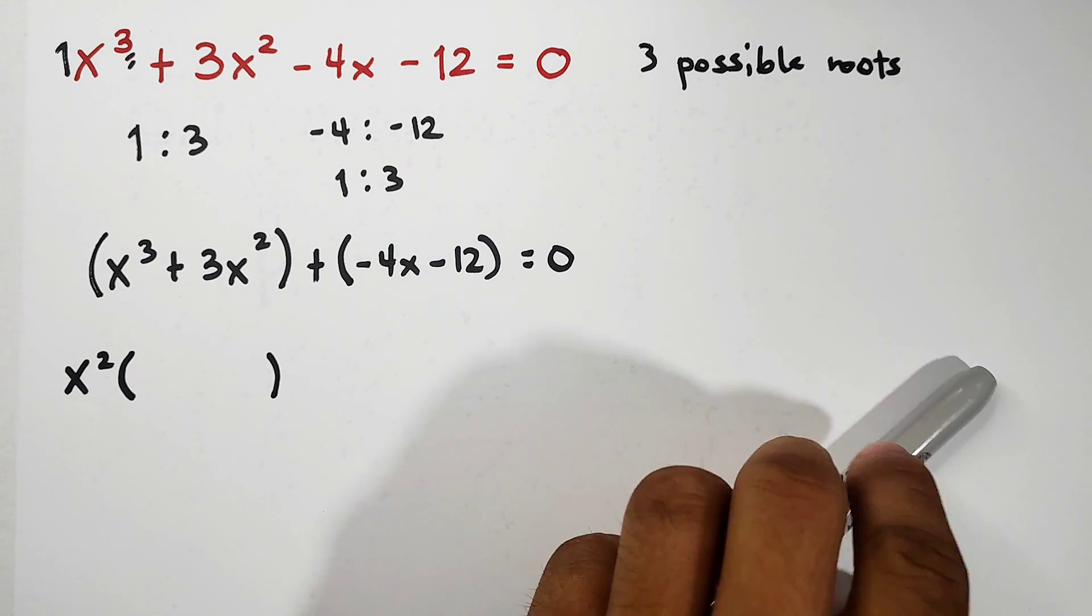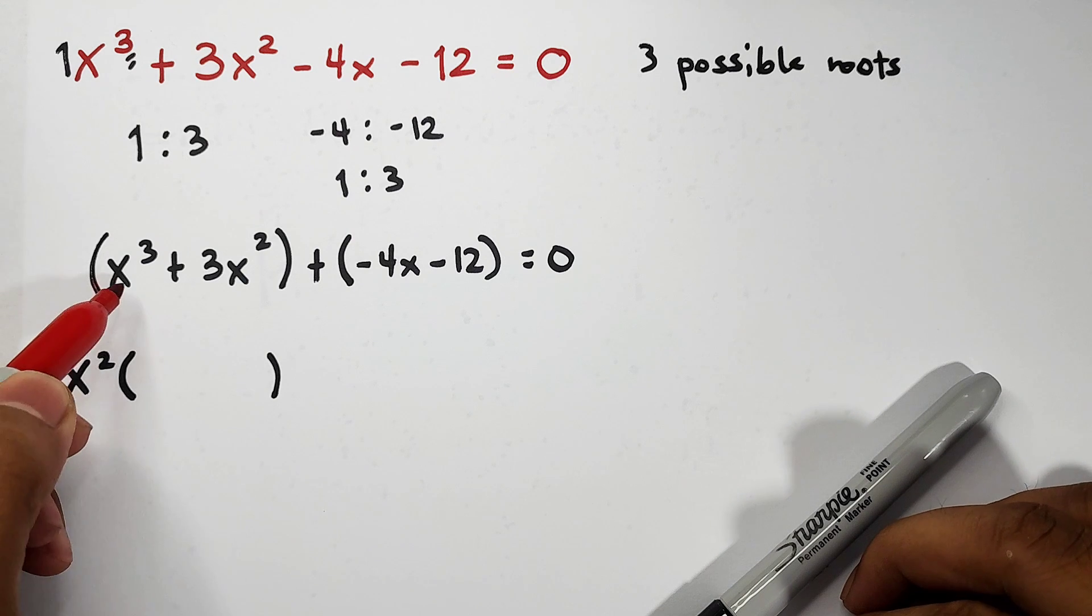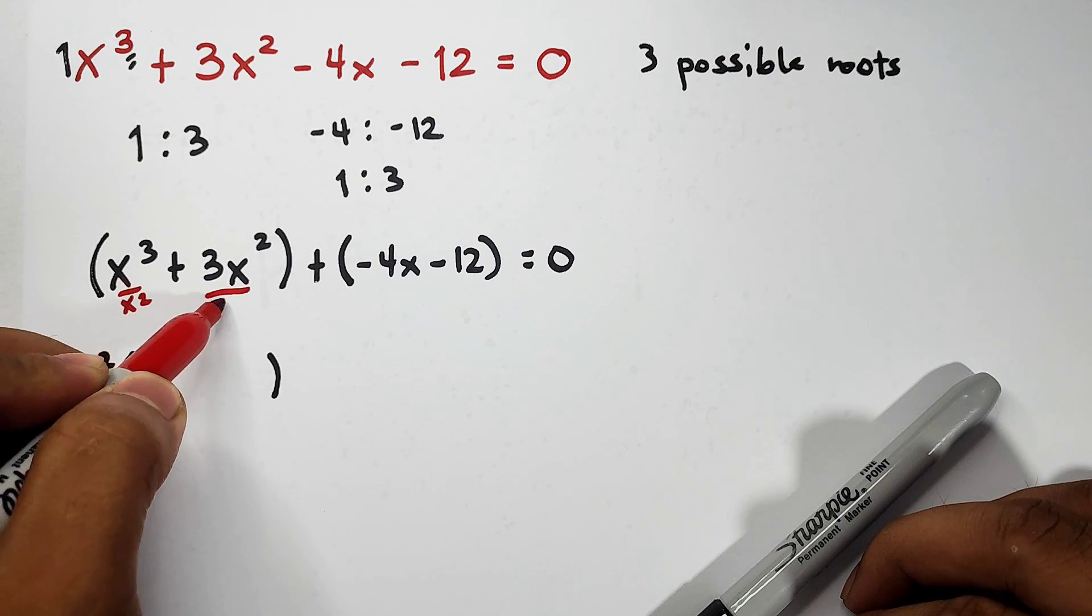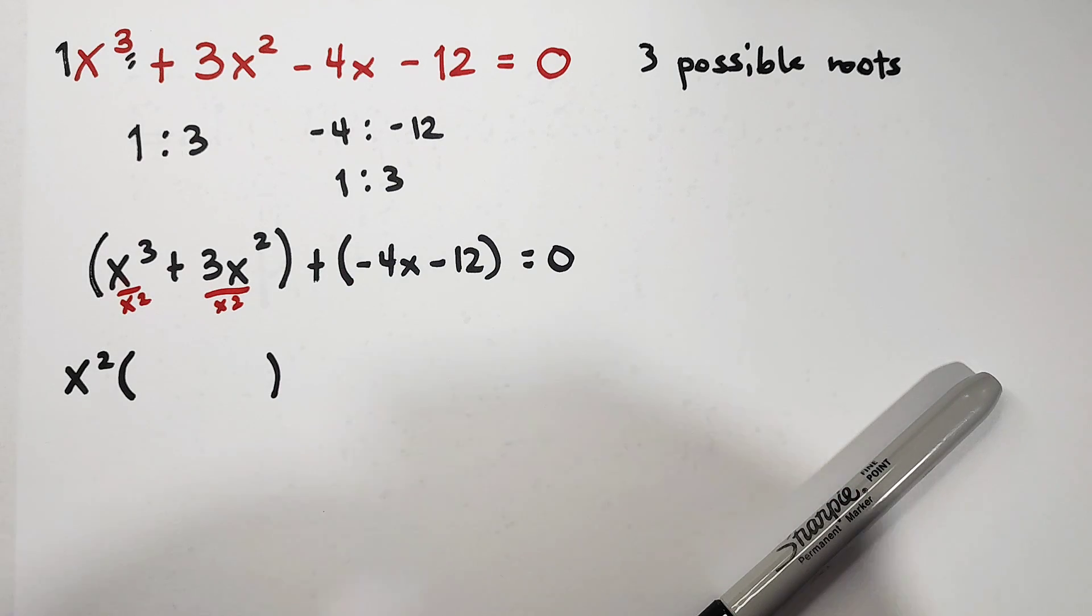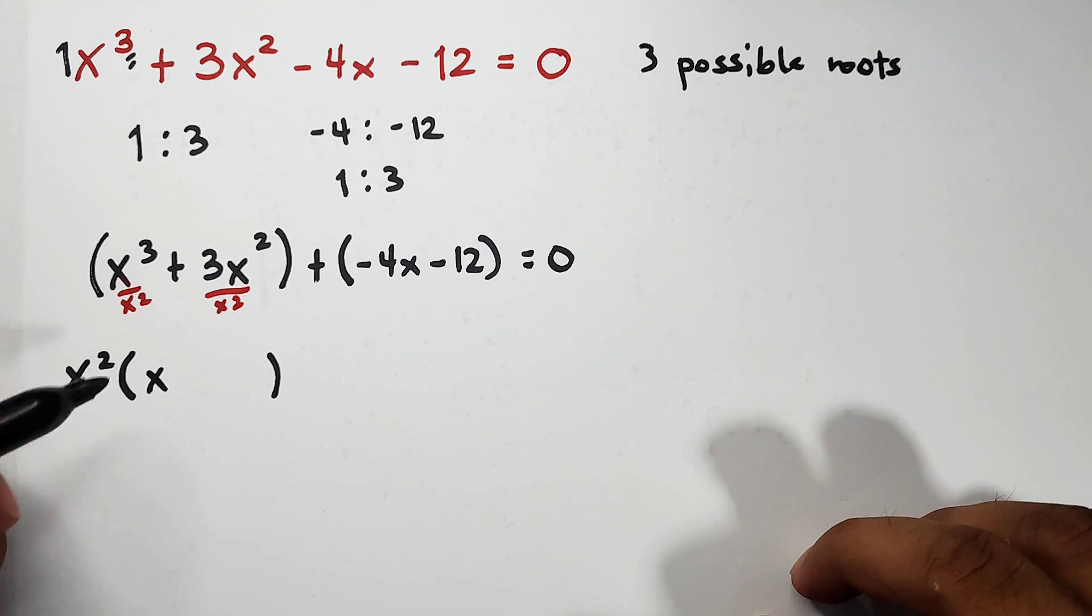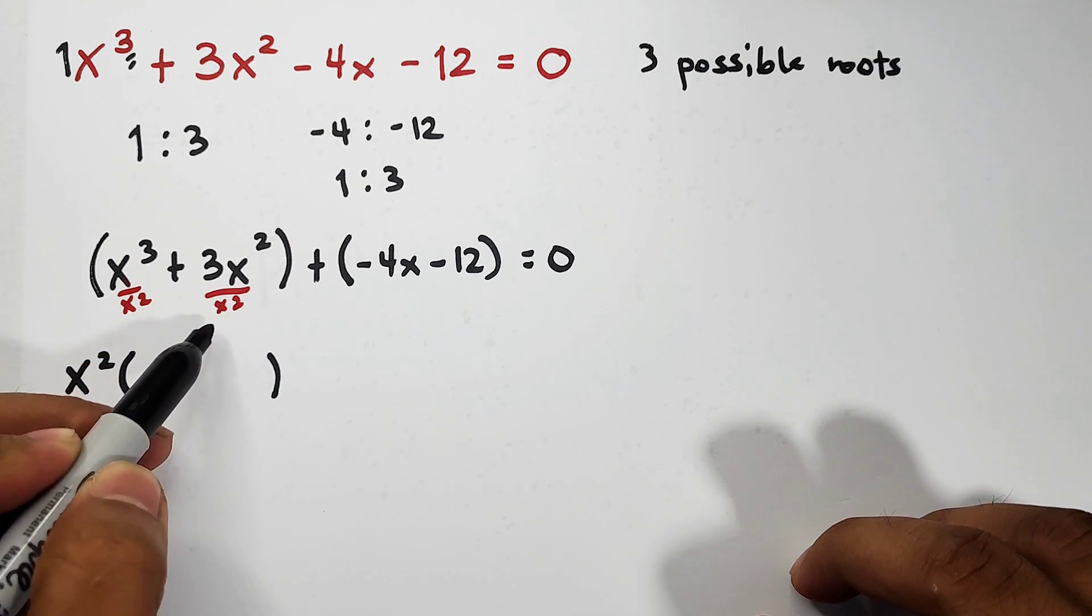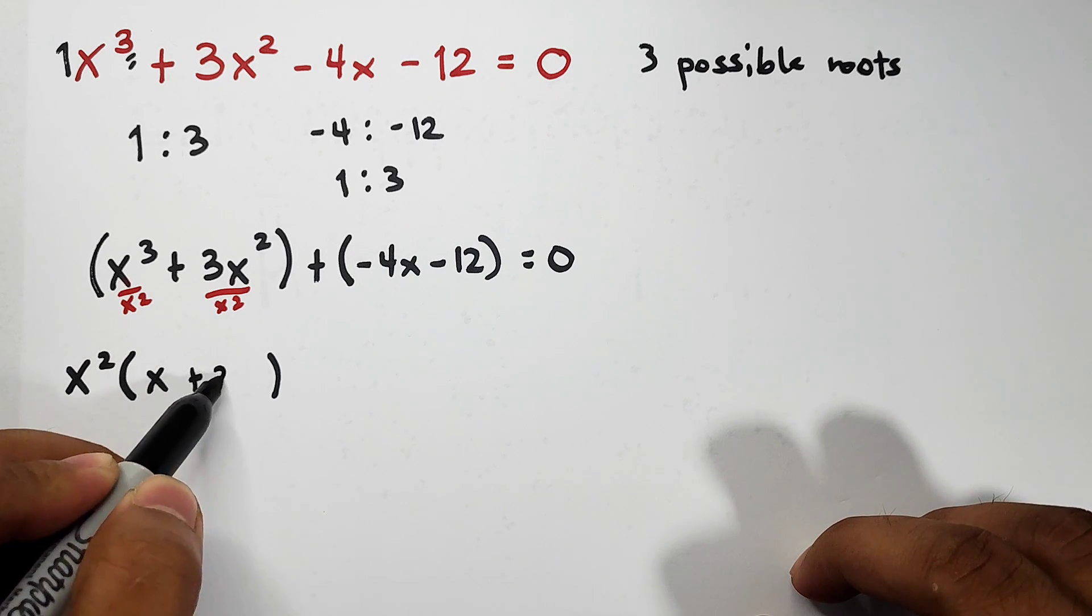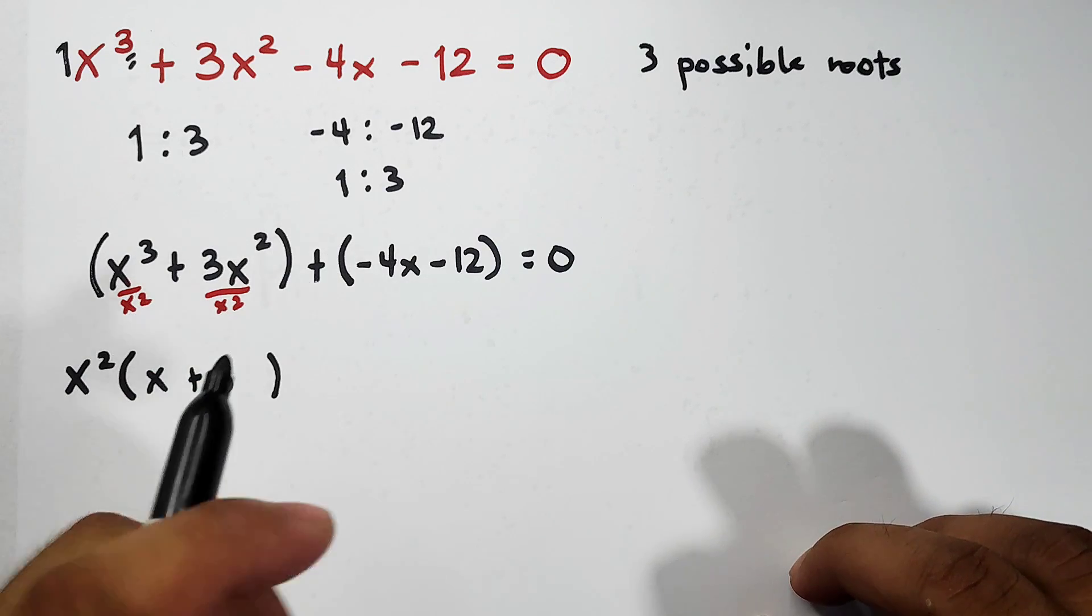To get what remains inside the parenthesis, divide each term by x squared. If you have x cubed over x squared, that is simply x. And 3x squared divided by x squared is positive 3 or plus 3. These are the factors.